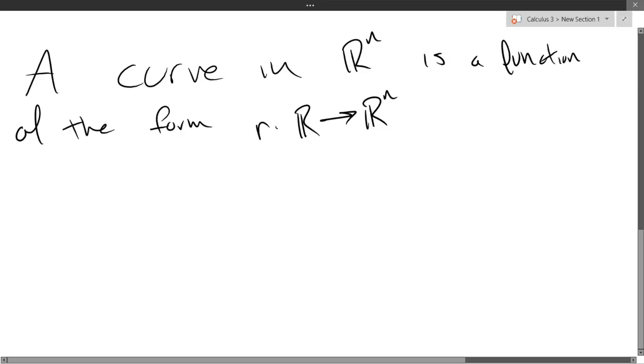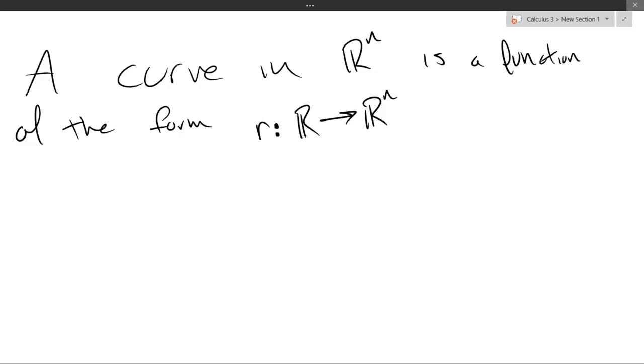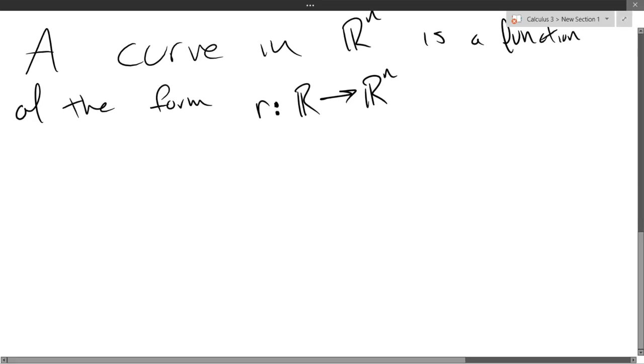A curve in Rn is a function of the form R to Rn. Usually we'll use the letter R like we did yesterday. So the function will be little r going from just one-dimensional real numbers to, we're generally going to go into three dimensions, but we could go to two dimensions sometimes.